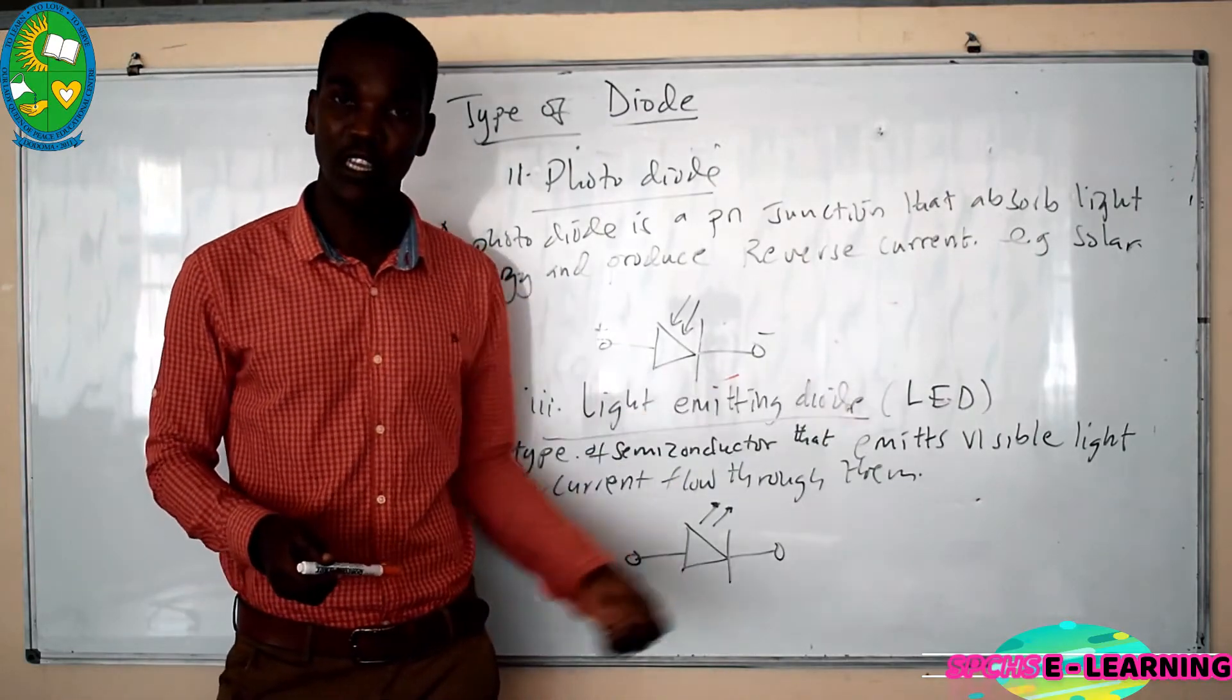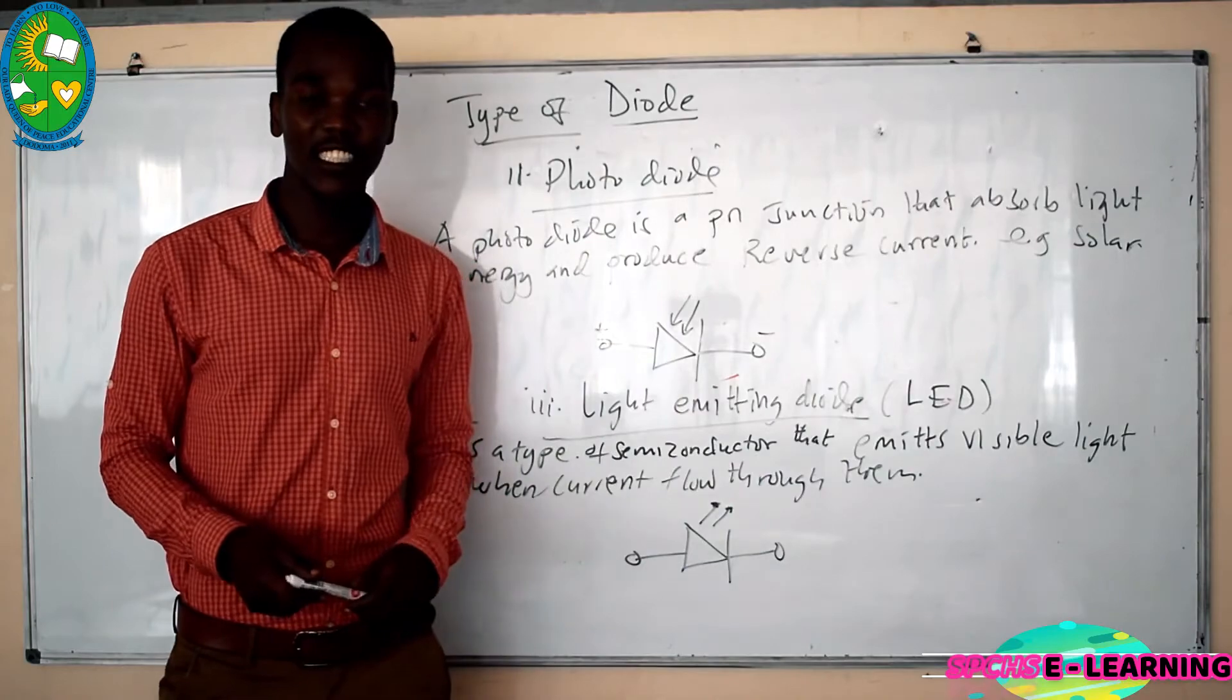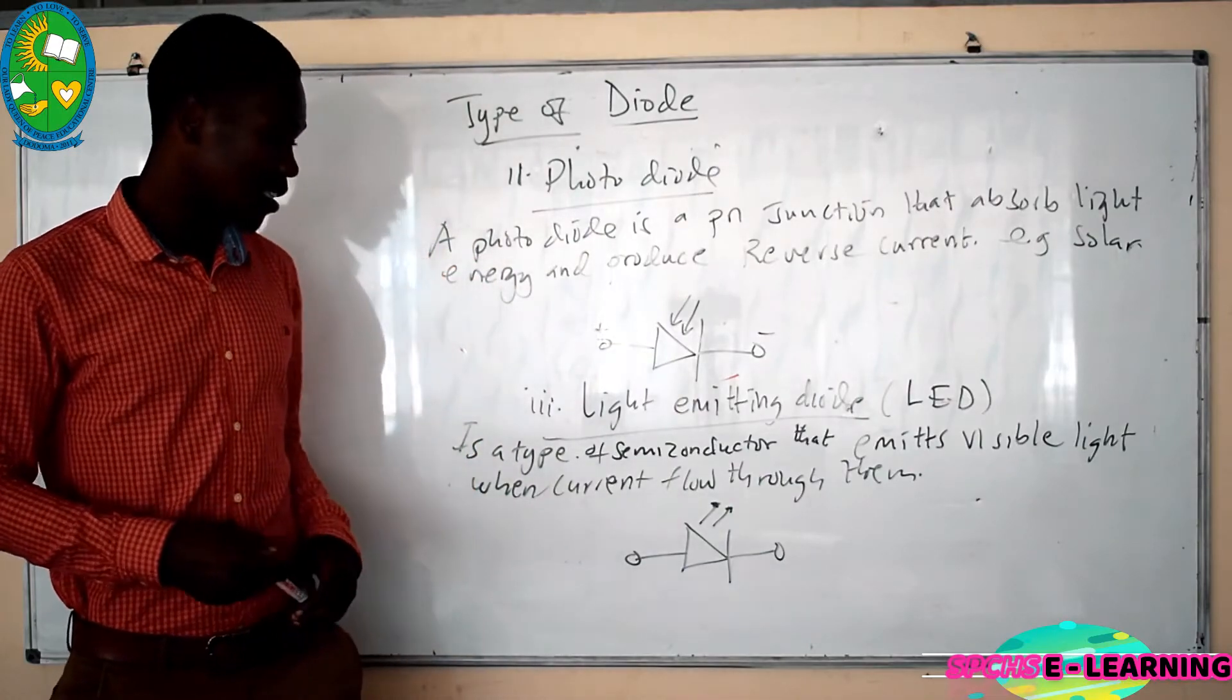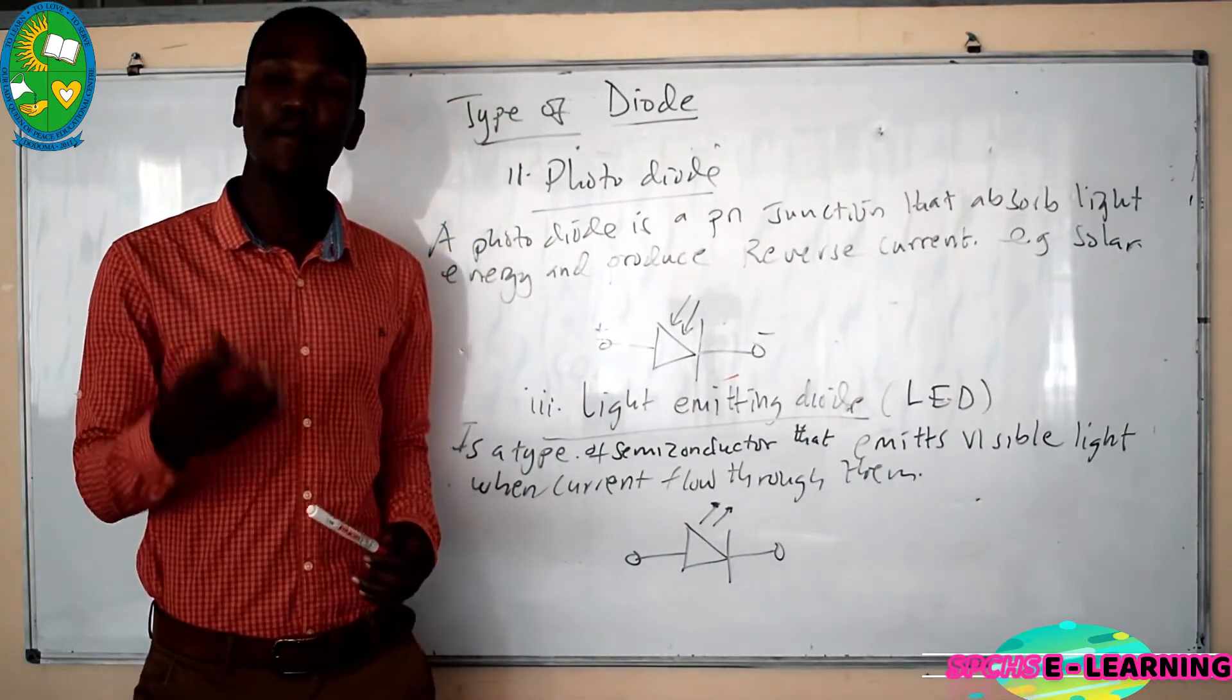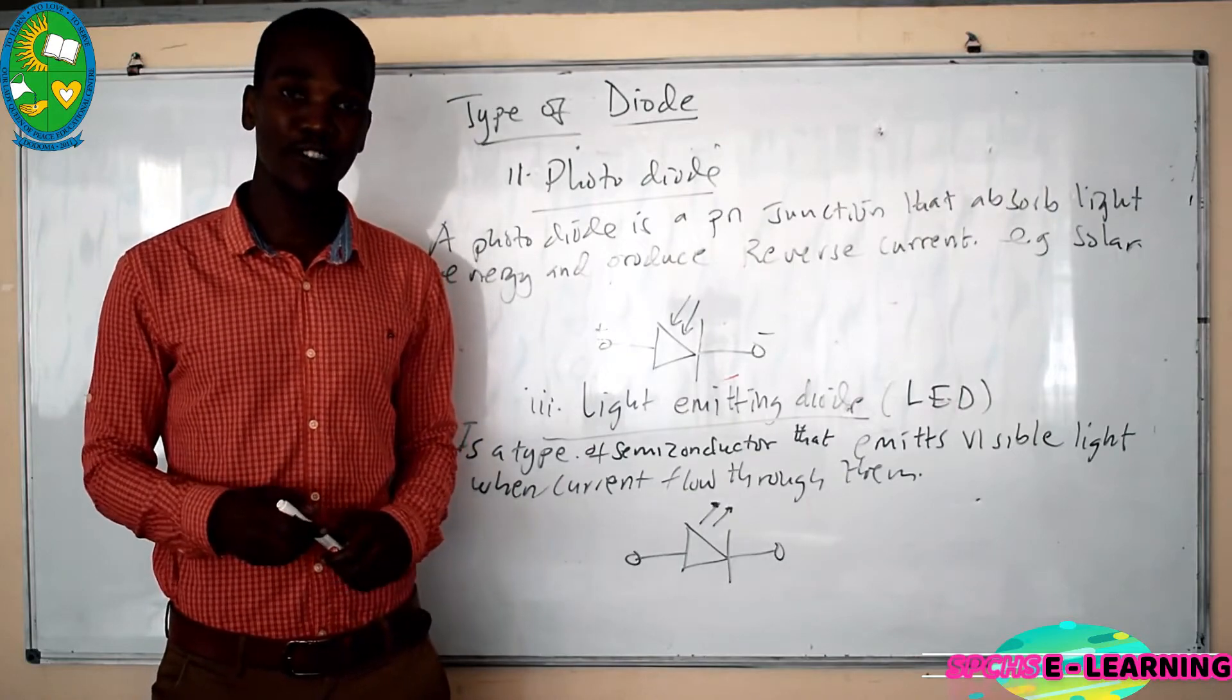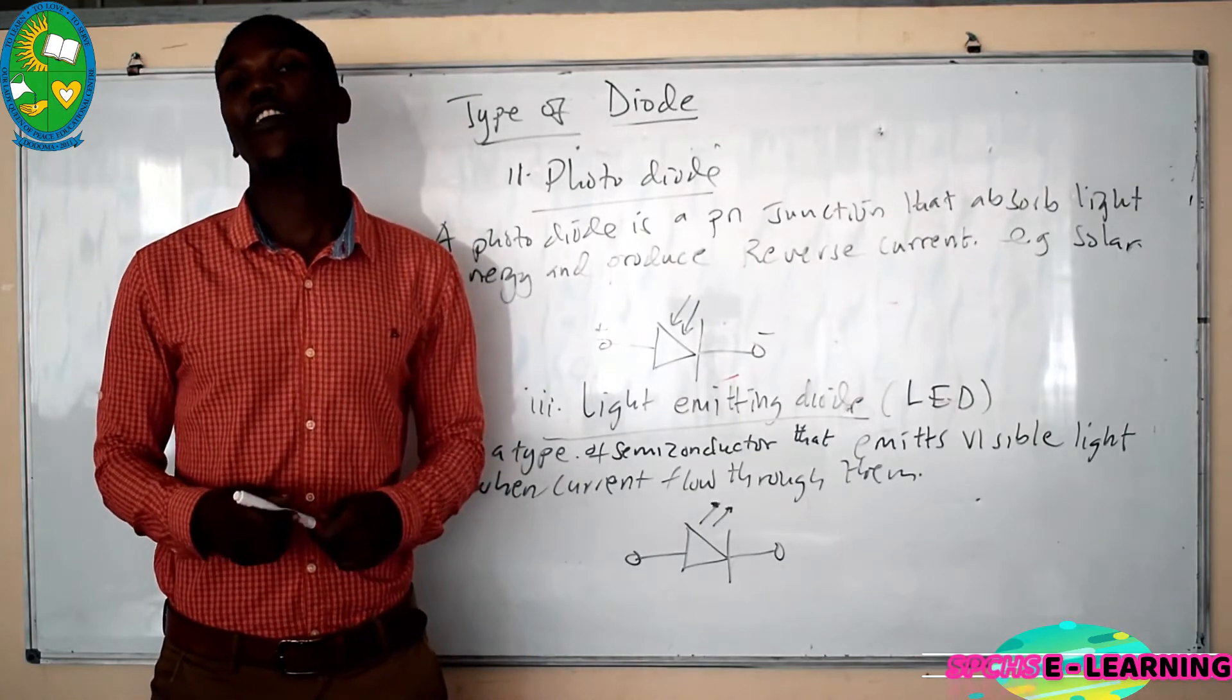The other type of diode is light emitting diode which is very important, known as LED. LED is a light emitting diode. This is a semiconductor which emits visible light when current is flowing through them. LEDs are very important in our daily life.